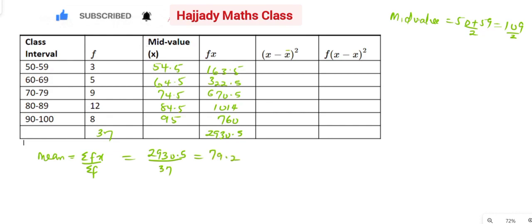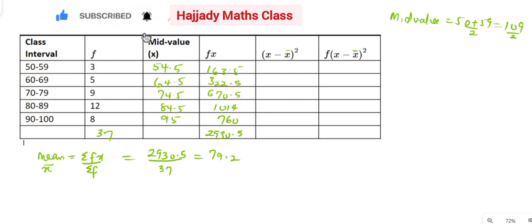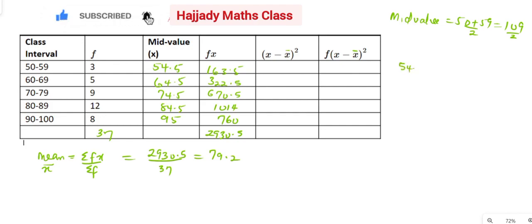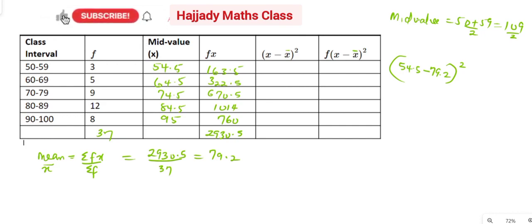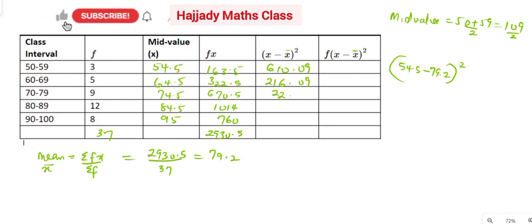There's a need for me to note that the mean is written as x̄. What we next need to do is get (x minus x̄) squared. For the first value, x is 54.5 minus x̄ which is 79.2, then squared. Similarly, 64.5 minus 79.2 then squared. Using the calculator: 54.5 minus 79.2 squared gives 610.09; the second gives 216.09; then 22.09; and then 249.64.